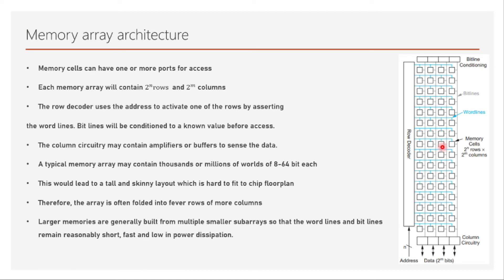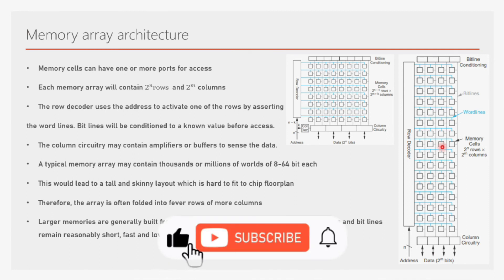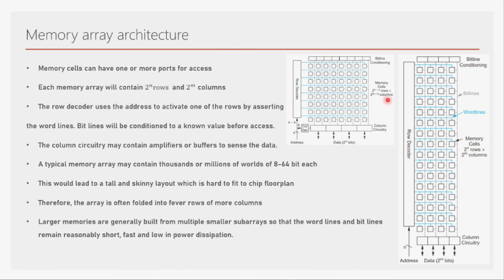In this figure I have shown you a folded memory array, it's a two-way folded memory array. The array is physically organized as 2 power n minus k rows and 2 power m plus k columns where k is a number. You can consider this number as how many folds you have done. If you have done a two-way fold of this thing.